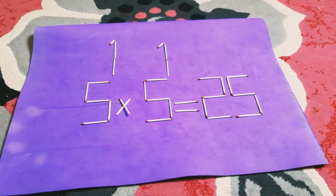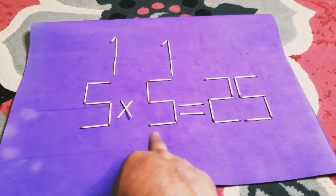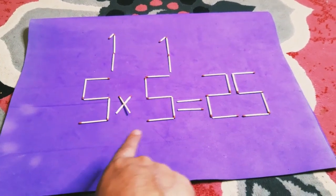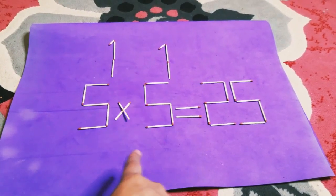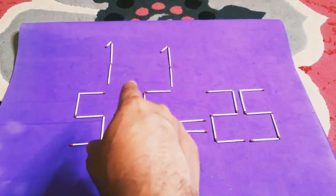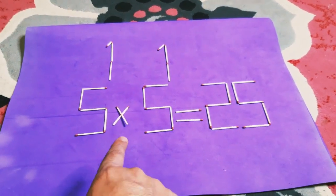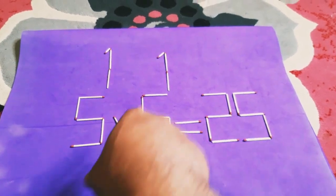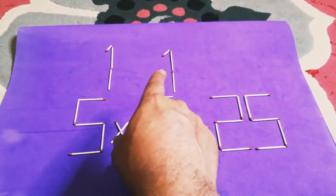Here we take only one 5, so we have 5, and we do addition of the exponents. So we have 5 to the power of 1 plus 1, I mean 2.